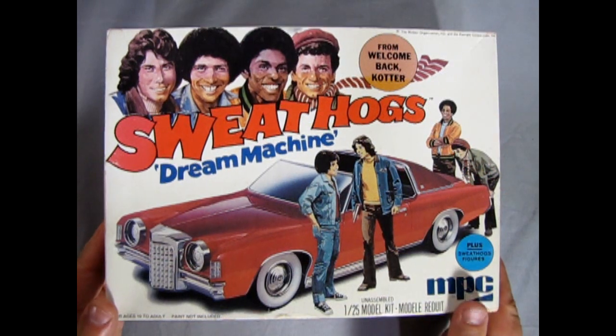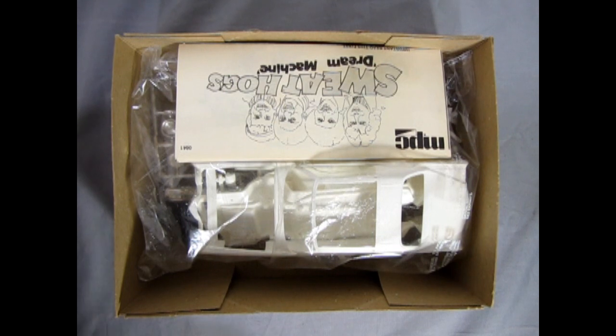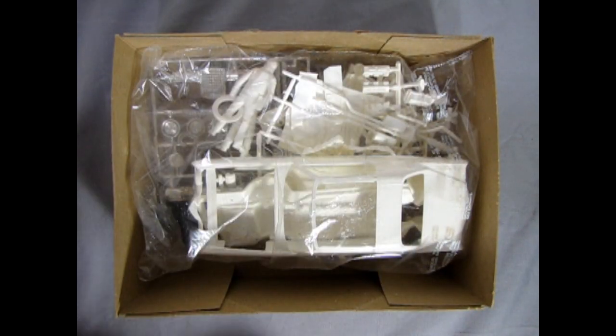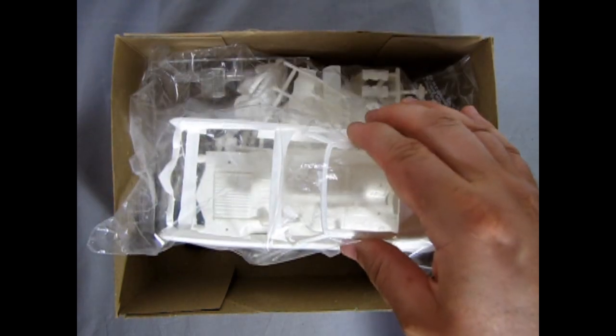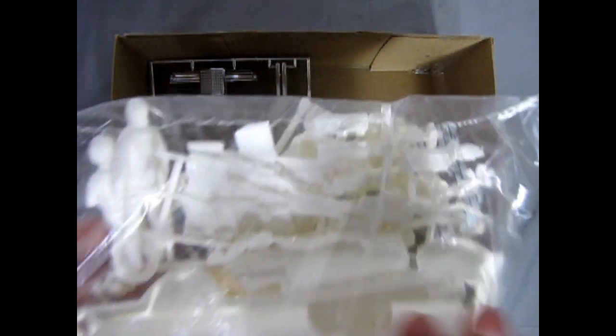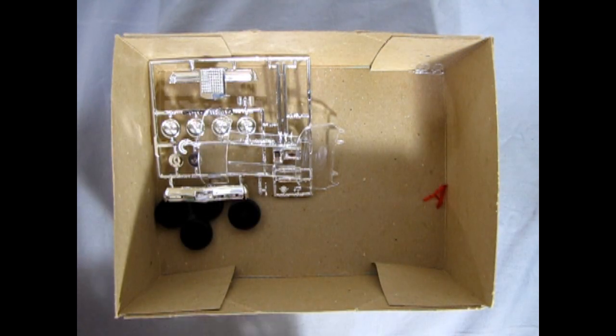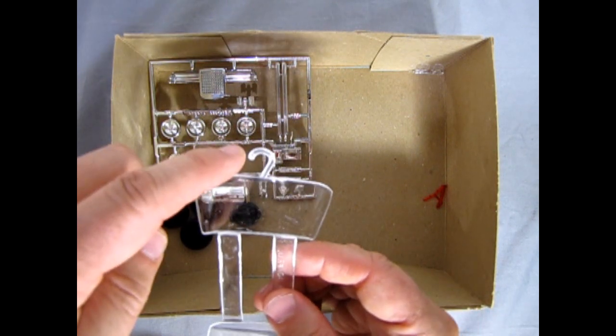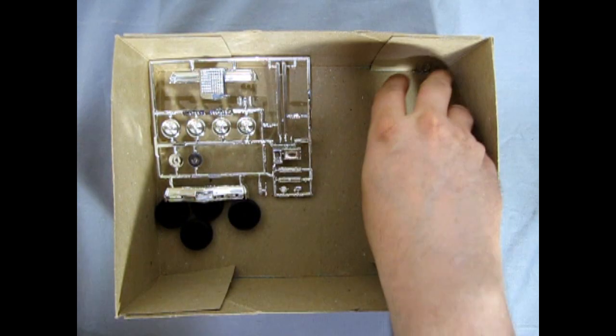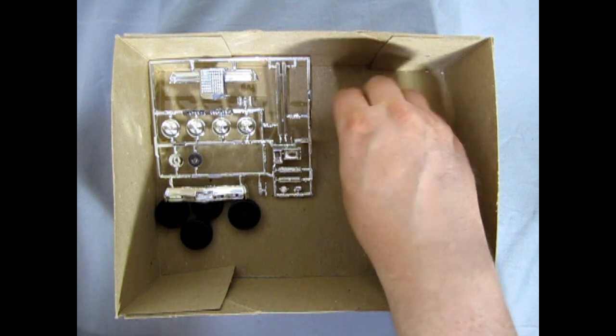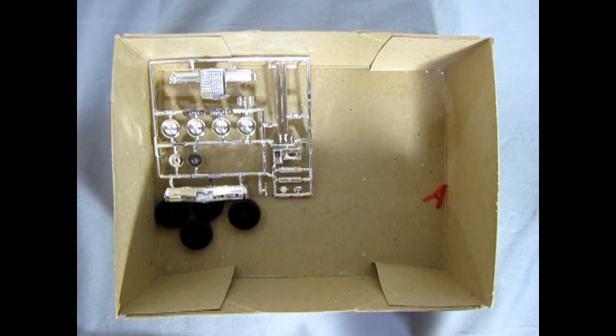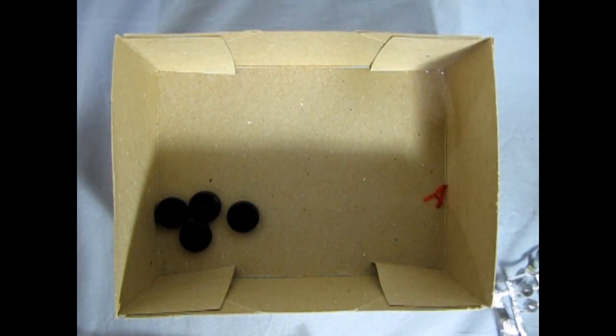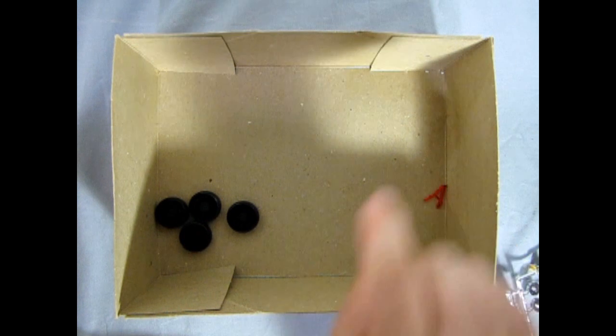And now let's take the lid off this box and check out the Sweat Hogs Dream Machine. And as you can see, we get our instructions right up front. And then a nice bag containing all our white plastic components. I can see a few of the Sweat Hogs in the bag. Then we've got our glass sitting here with the nice little hook, much like a clothing rack. In this corner we have our headlights. And then we've got our chrome detail right here, as well as the tires and it looks like our taillights.